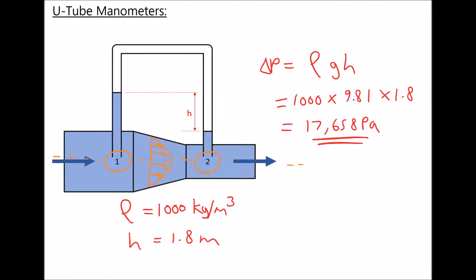The other important thing to point out is that the pressure in the wider section of the duct is actually higher than the pressure in the narrow section. That change in pressure isn't necessarily due to a pressure loss — even if all of the energy of the fluid was conserved, we would still see a drop in pressure through the converging section because the velocity of the fluid increases. So on the left hand side we have high pressure and lower velocity, and on the right hand side we have lower pressure and higher velocity. In future tutorials we'll look at how to calculate the changes in velocity as well as the changes in pressure.